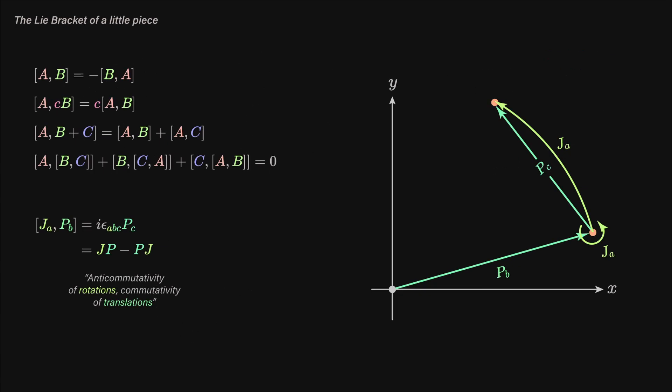For example, the JP bracket, the one telling you how a rotation and translation ought to behave, gives you another translation, and this is pretty easy to see if you carry out some mathematics, easier still if you just draw a picture. The JP bracket means that you have a composition JP minus PJ. That means you apply a rotation to something, then a translation.